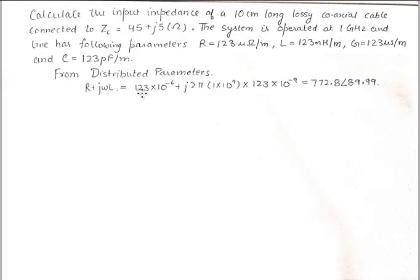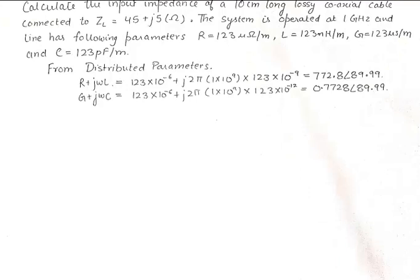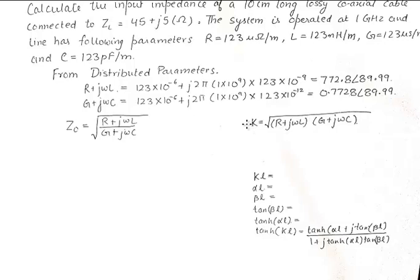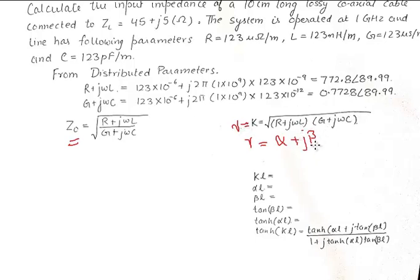If we have distributed parameters, the formulas for Z naught and gamma are as follows. Gamma is the propagation constant, and Z naught is given by the square root of (R + jωL) over (G + jωC). We have done a separate video on the parameters of a transmission line — I will put a link in the description. Gamma is also equal to alpha + j*beta.